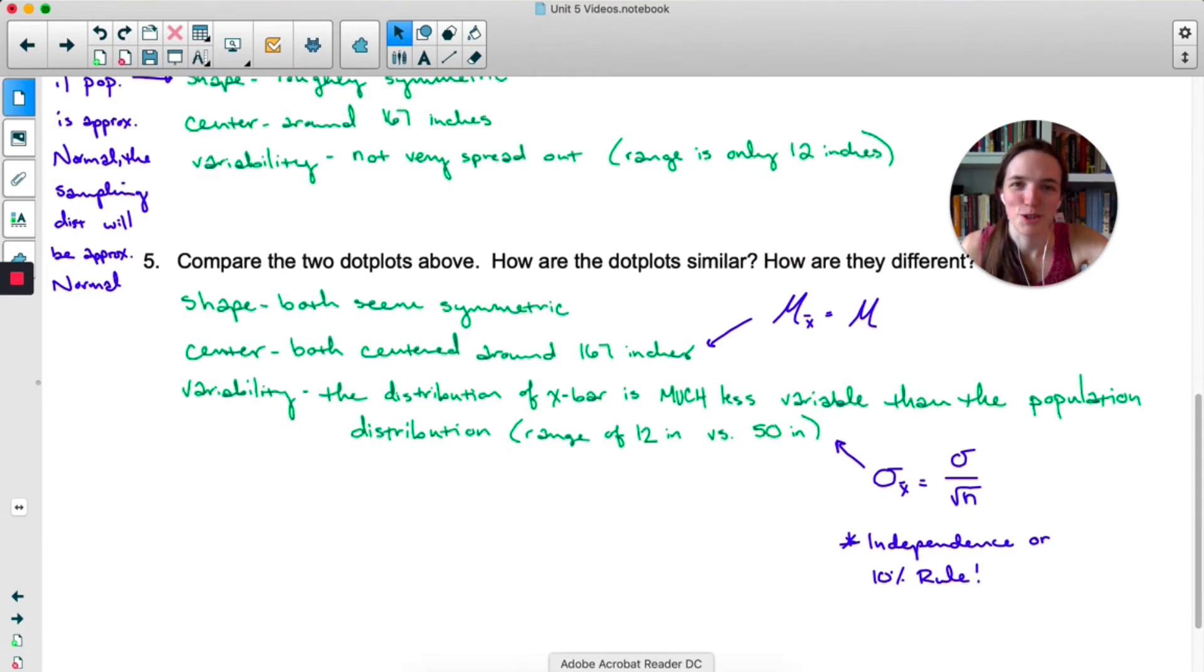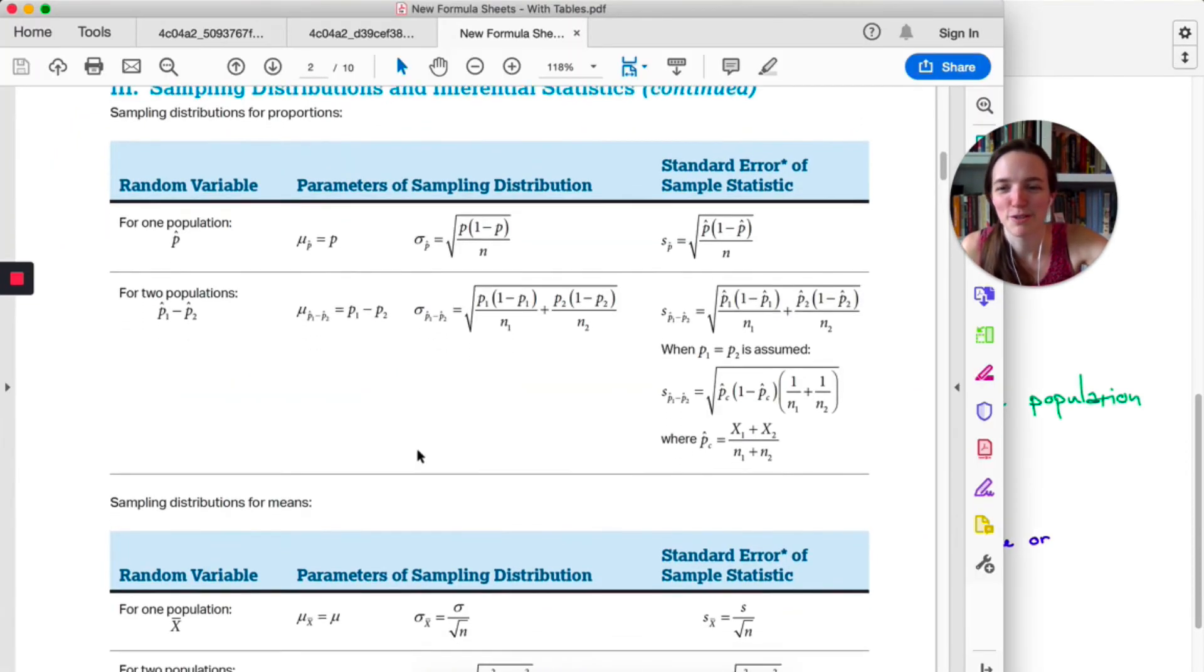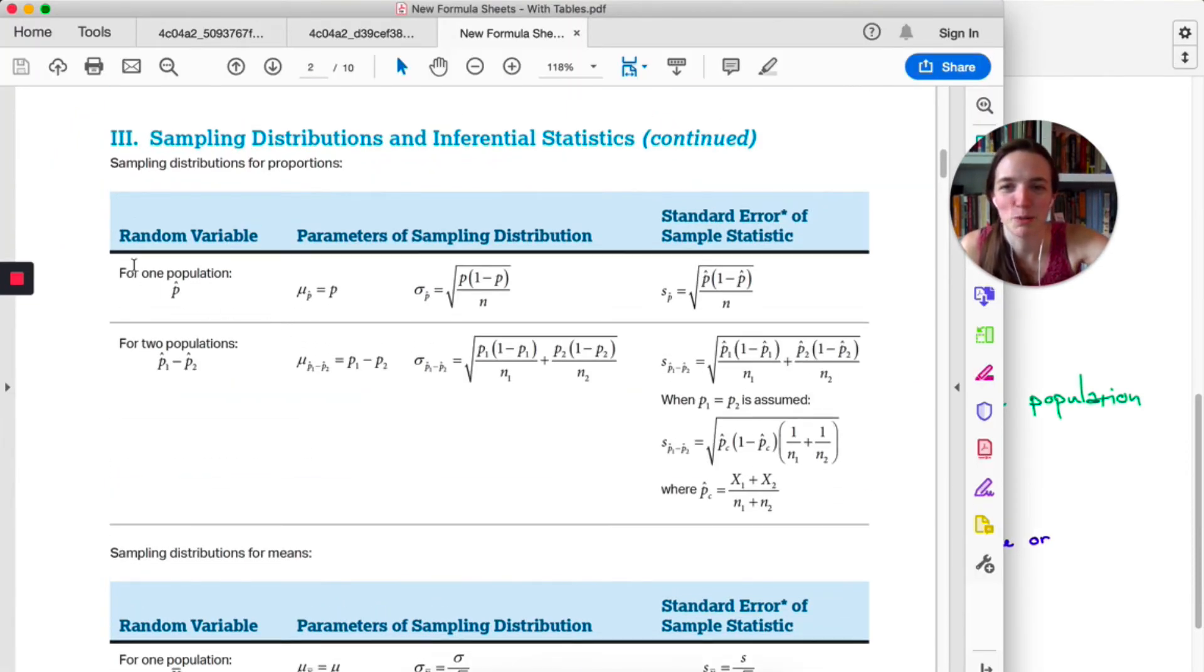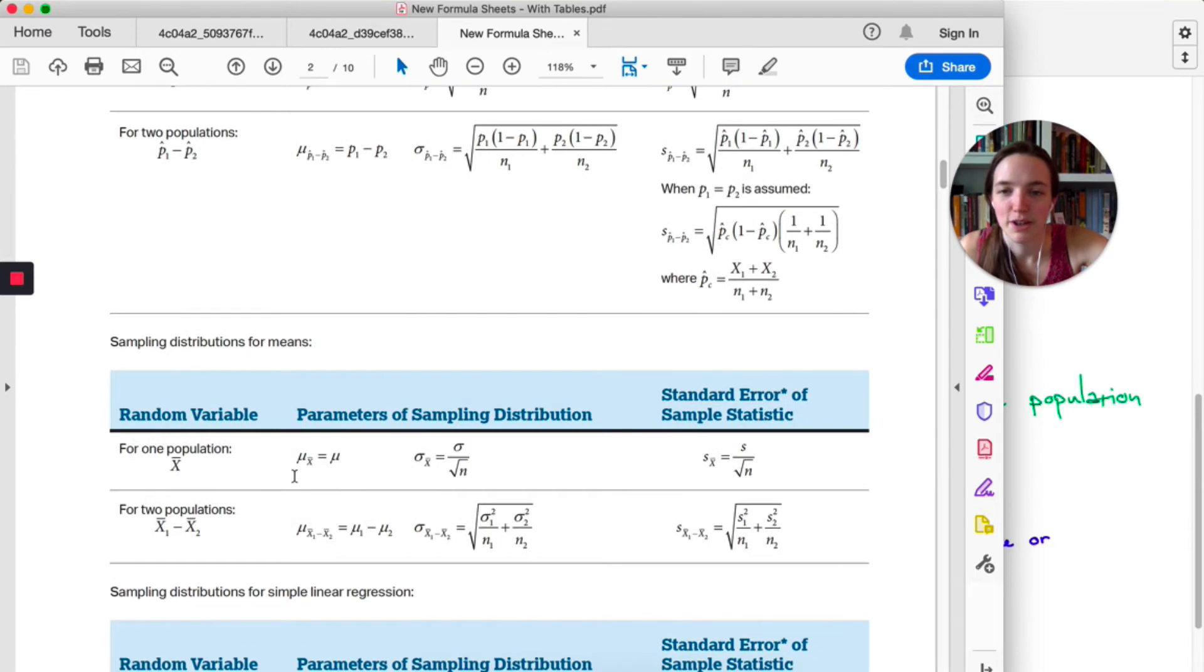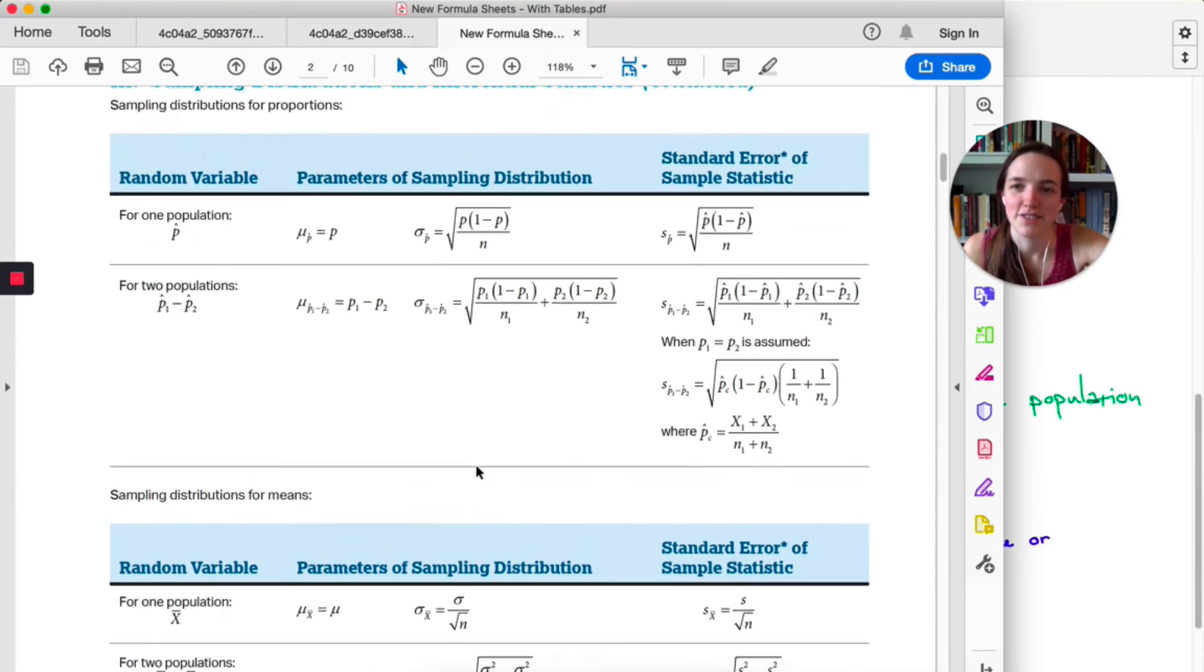Now, as always, don't memorize these formulas. If you go to the formula sheet, last time we were dealing with one population proportion, now we're dealing with one population mean. So here we go, the mean of the sampling distribution of x-bar is μ. Standard deviation of the sampling distribution of x-bar is the standard deviation of the population over root n. So they've organized this very well.